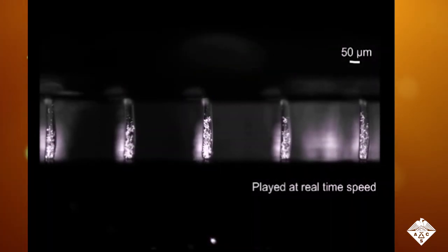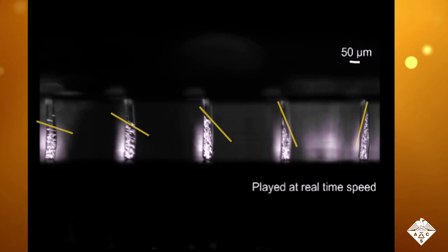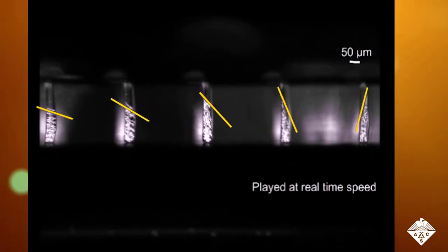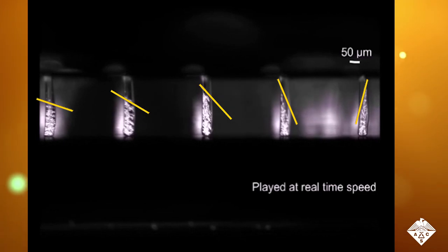The researchers infused a polymer with carbonyl iron powder particles. Magnets were placed underneath the mixture as it solidified in a mold, altering the particles' alignments and magnetic properties so that they were different in adjacent cilia, as shown by the yellow lines.